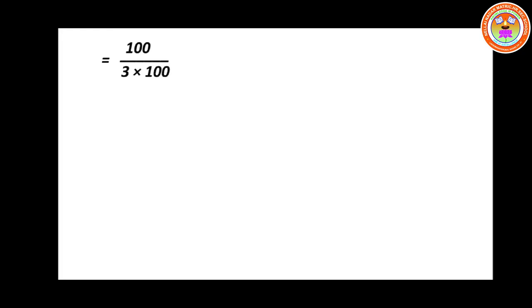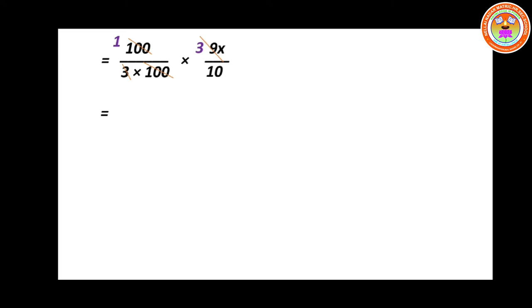Now simplification: 100 divided by 3, into 100, into 9x divided by 10. You can cancel 100 and 100 — 1 times. And 3 and 9 will get cancelled — 3 threes are 9. So in the next step you will be getting 1 into 3x, that is 3x divided by 10. Mark this as equation number 2.